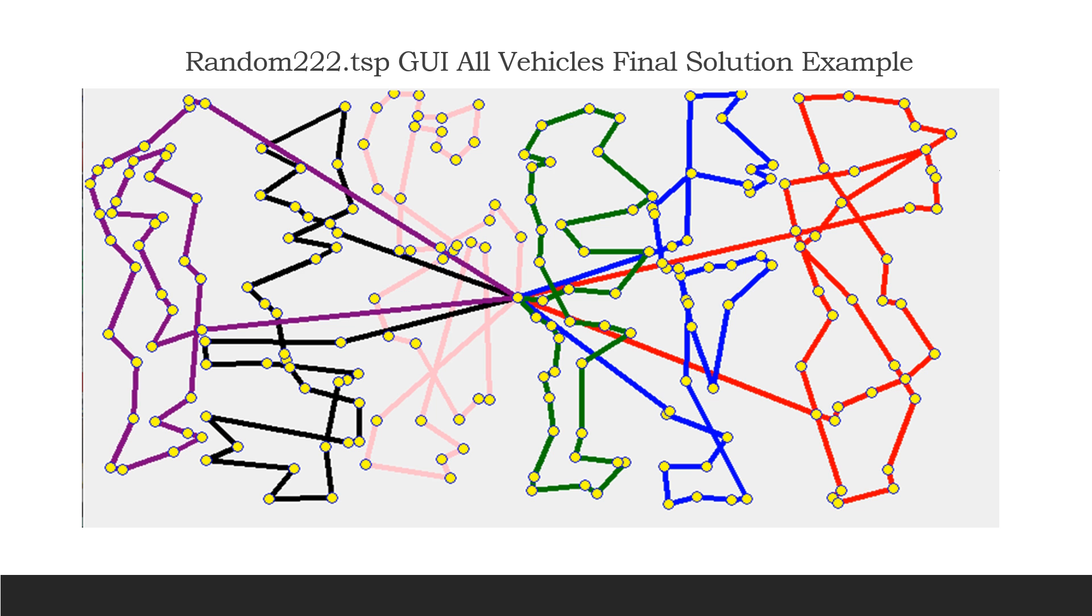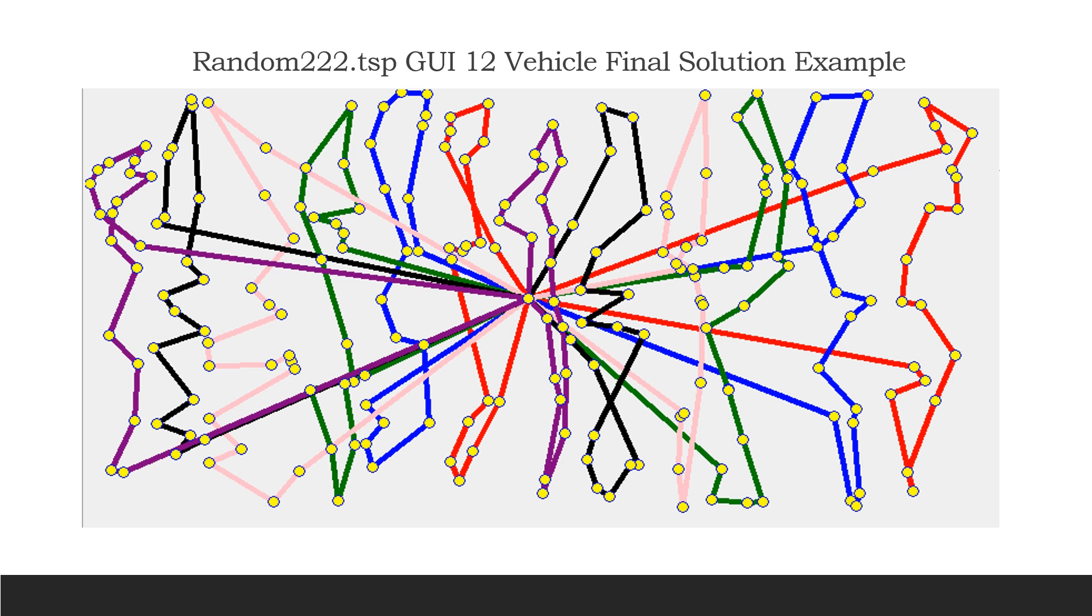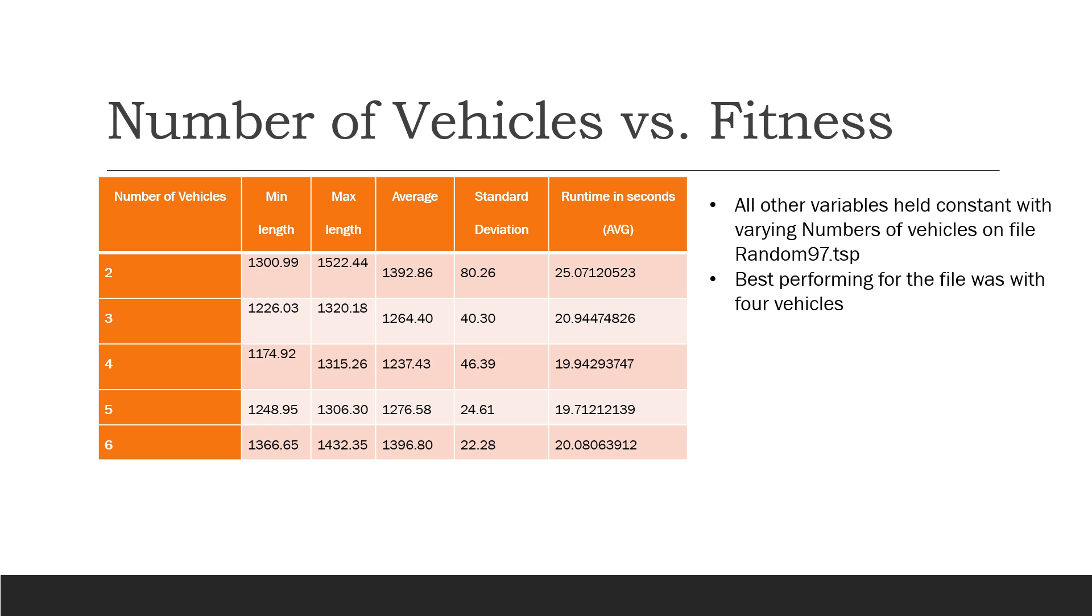The way I decided to do color in my GUI: I chose to go red, blue, green, pink, black, purple, and then cycle through that so as to not have to deal with random colors giving ugly or similar colors. The next slide shows 12 vehicles on Random 222.tsp. Some colors are used multiple times, but it's still pretty evident, like the red on the far right is not the red in the center. For this one, because they're broken up into smaller amounts of nodes per vehicle, most of these look like pretty optimal or decent solutions for the vehicle's route.